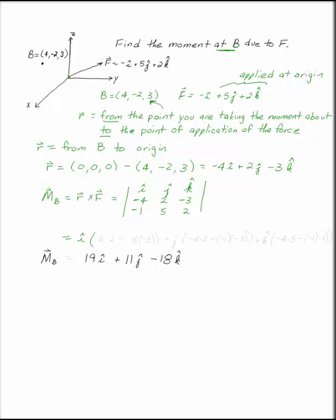You have i times (2 times 2 minus 5 times -3), minus j—don't forget that minus sign as you're doing your cross product—times (-4 times 2 minus -1 times -3). Got lots of minus signs in there. Plus k times (-4 times 5 minus -1 times 2). So the moment at B is 19i + 11j - 18k.